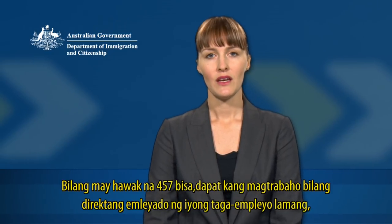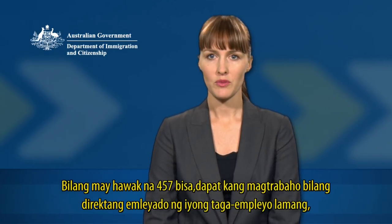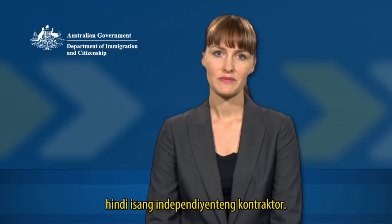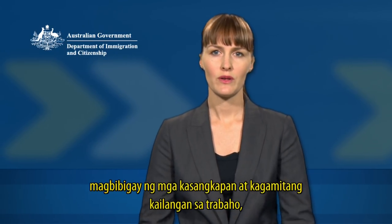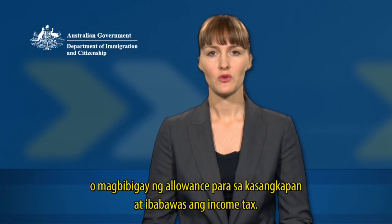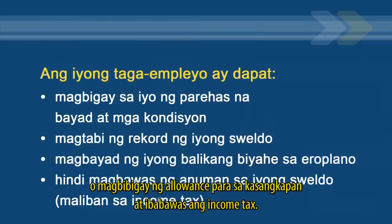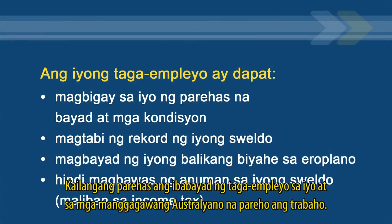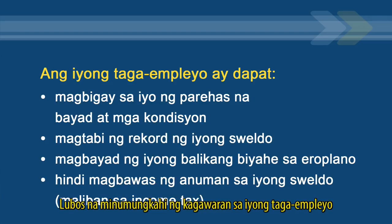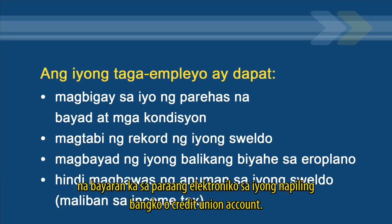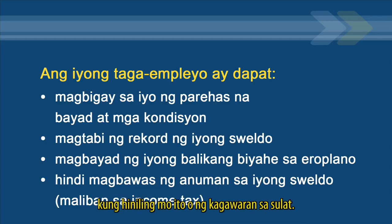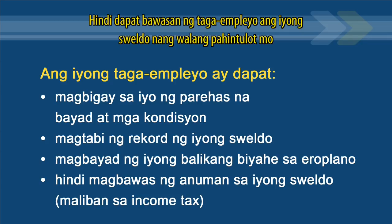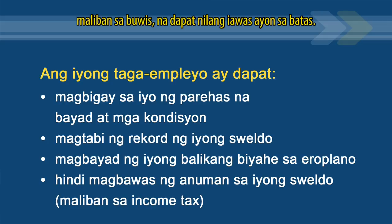As a 457 visa holder, you must work only as a direct employee of your employer, not as an independent contractor. As a direct employee, your employer directs the work you undertake on an ongoing basis, provides the tools and equipment necessary for the work or provides you with a tool allowance, and deducts income tax. Your employer must pay you the same amount as Australian workers doing the same work. Your employer is strongly recommended to pay you electronically into your nominated bank or credit union account. Your employer must pay your return airfare if you or the Department request this in writing. Your employer must not make deductions from your pay without your permission, other than tax which they must deduct by law.